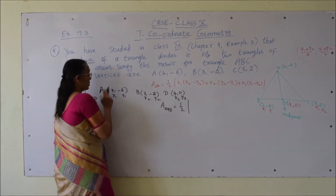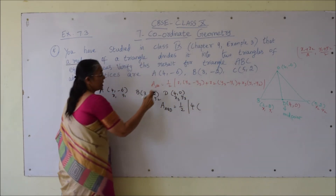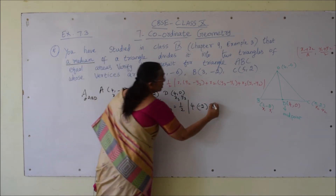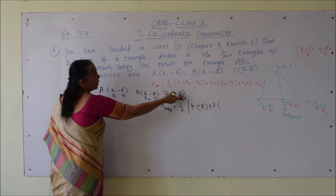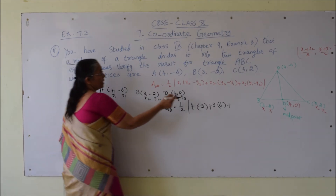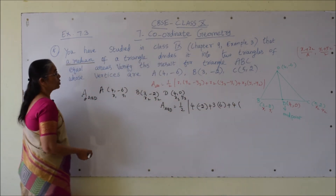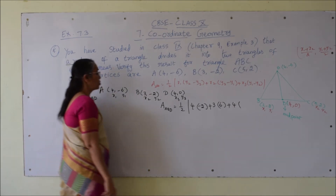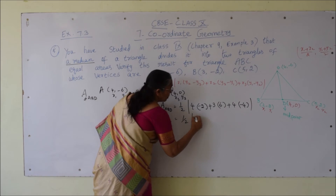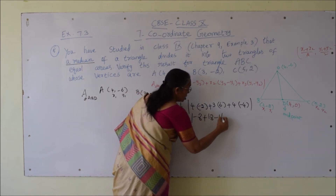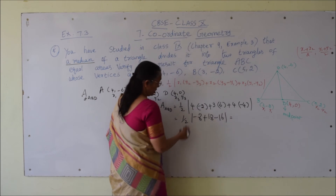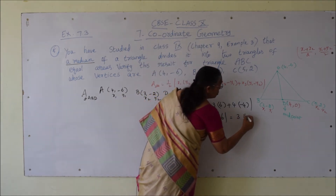Area of triangle ABD = half times |x1(y2 - y3) + x2(y3 - y1) + x3(y1 - y2)| = half times |4(-2 - 0) + 3(0 - (-6)) + 4(-6 - (-2))| = half times |4(-2) + 3(6) + 4(-4)| = half times |-8 + 18 - 16| = half times |-6| = 6/2 = 3 square units.